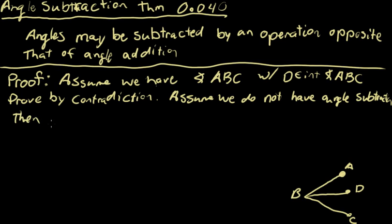Then we'll say measure of angle ABD will not equal the measure of angle ABC minus the measure of angle DBC.